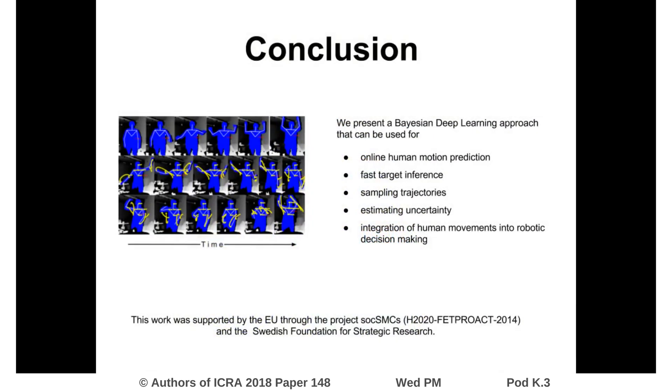In conclusion, we presented a Bayesian deep learning approach to model future human motion. Our model can be used in an online HRI setting to predict trajectories and infer targets without target-specific training data. We can sample different possible future movements and estimate the uncertainty over predictions. The predictions can be integrated into a robot's decision-making process. If you want to discuss the details of this work, please stop by our poster.